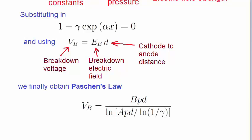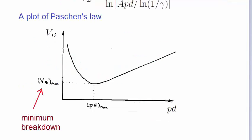A plot of this relationship looks like this. The most notable feature of this curve is that there is a minimum breakdown voltage for a particular combination of the product of pressure and electrode distance, pd.